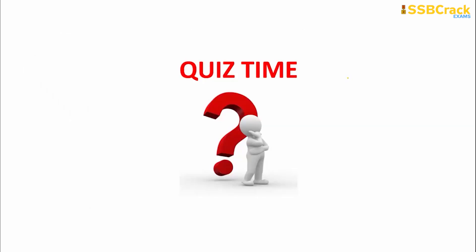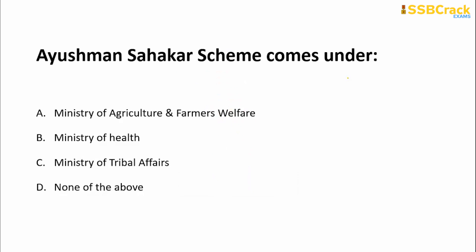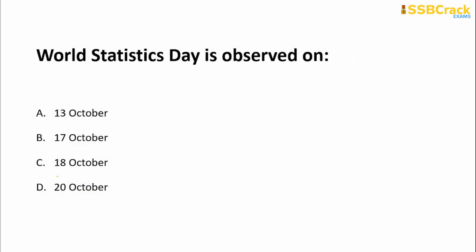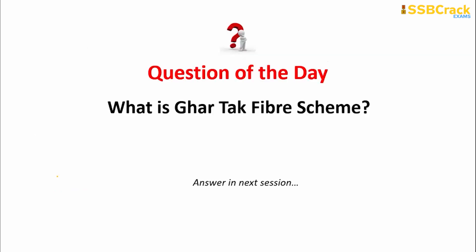Now let's revise with a quick quiz. First: the Ayushman Sahakar Scheme comes under which ministry? — Ministry of Agriculture and Farmers' Welfare. Second: National Solidarity Day is observed on which date? — 20th October every year. Third: World Statistics Day is also observed on 20th October.